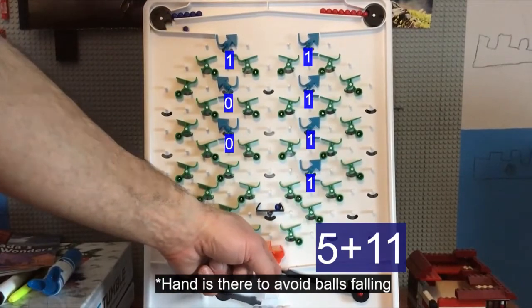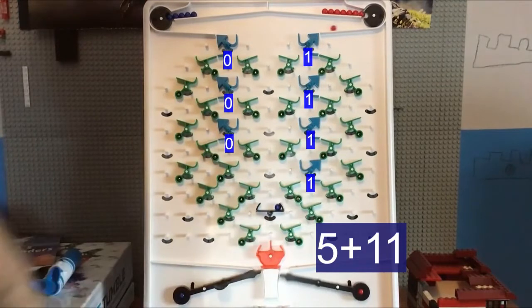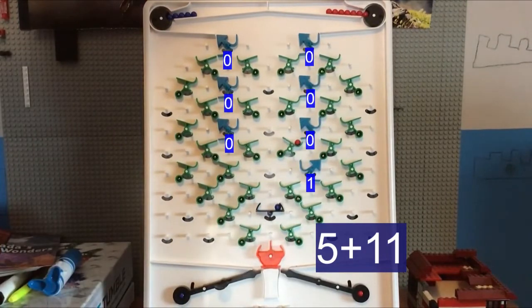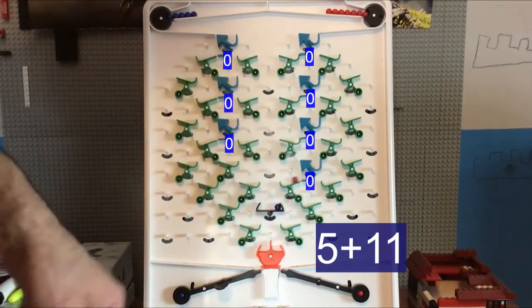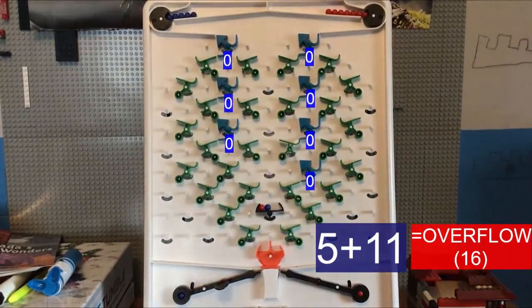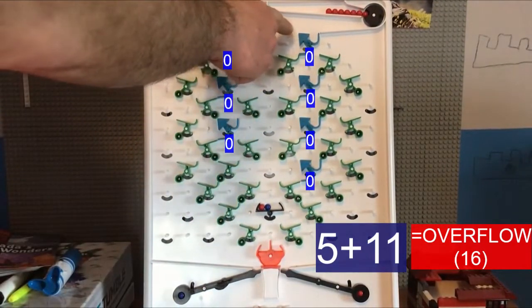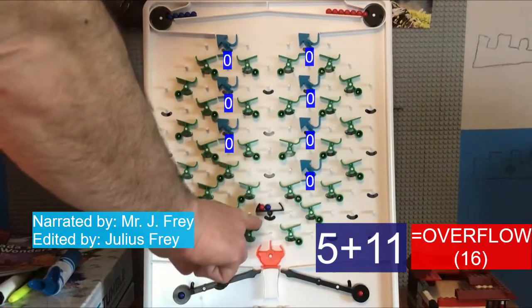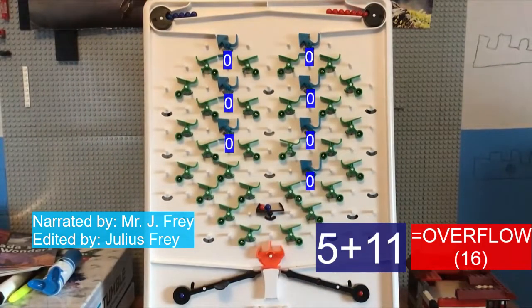Here we go. And there we have the calculation. So we have all of these set to the left. We have a red one in there, which means that an overflow happened. And there we go.